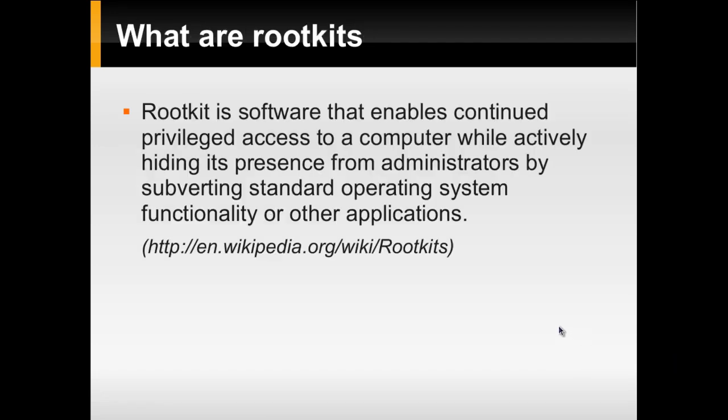Let's see what rootkits are. A rootkit is software that enables continued privileged access to a computer while actively hiding its presence from administrators by subverting standard operating system functionality or other applications. In simple words, a rootkit is software that gives unauthorized admin access to unprivileged users. Those users get the highest level of clearance and can do malicious things to the operating system or computer system. Now let's go for a demo to show how to install RKHunter and use it to audit the operating system.